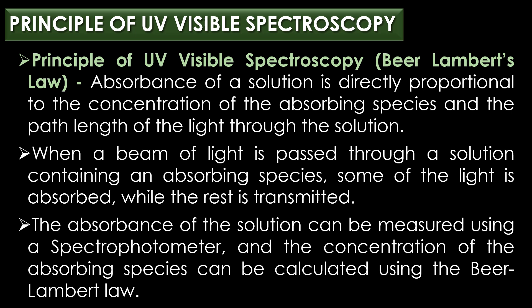The principle of UV-visible spectroscopy is based on the Beer-Lambert's Law, which states that the absorbance of a solution is directly proportional to the concentration of the absorbing species and the path length of the light through the solution. When a beam of light is passed through a solution containing an absorbing species, some of the light is absorbed while the rest is transmitted. The absorbance can be measured using a spectrophotometer and the concentration calculated using Beer-Lambert's Law.